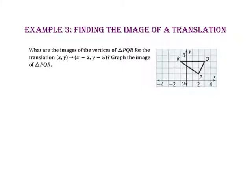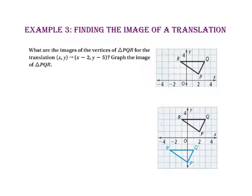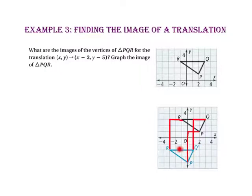In example 3, we will find the image of a translation. What are the images of the vertices of triangle PQR for the translation (X, Y) mapped onto (X minus 2, Y minus 5)? Graph the image of triangle PQR. For our translation of left 2 down 5, we will move each of the points to the left 2 and down 5 units. You can see we moved point R 2 units to the left and 5 units down. We moved point P 2 units to the left and 5 units down. And finally, we moved point Q 2 units to the left and 5 units down. Then we get the image P', Q', R'.